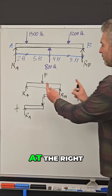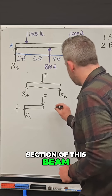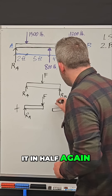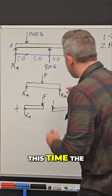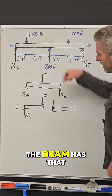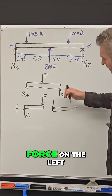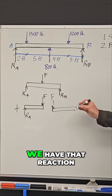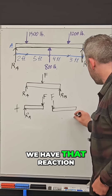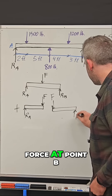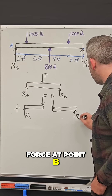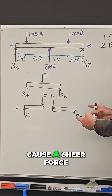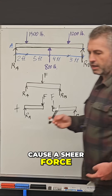Now if we looked at the right section of this beam, if we were to cut it in half again, this time the right side of the beam has that force on the left, and on the right side we have that reaction force at point B, RB. And so this is also going to cause a shear force.